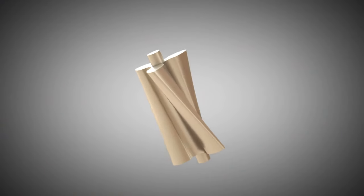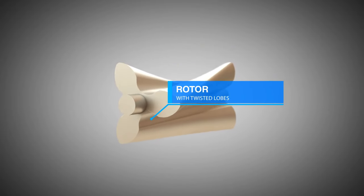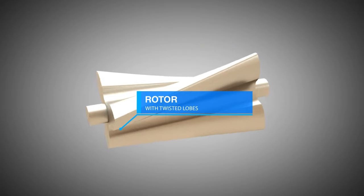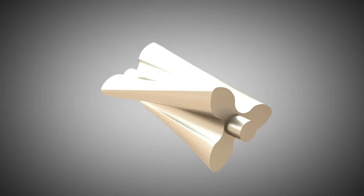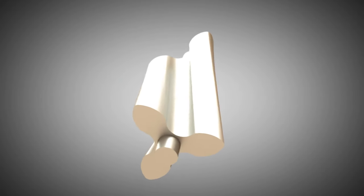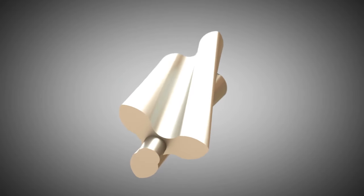The heart of the Roots Type Supercharger, or blower, is the rotor. Roots Blower rotors are available in different designs. They can be equipped with twisted lobes, for example, but they also come with straight lobes.